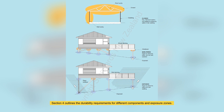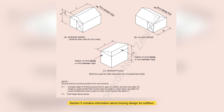Section 4 outlines the durability requirements for different components and exposure zones. Section 5 contains information about bracing design for subfloor, walls and roof against wind and earthquake forces.